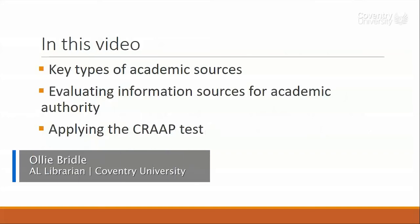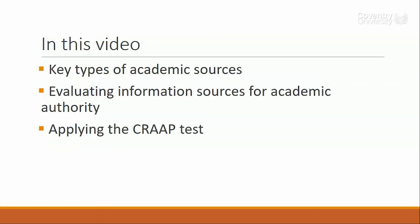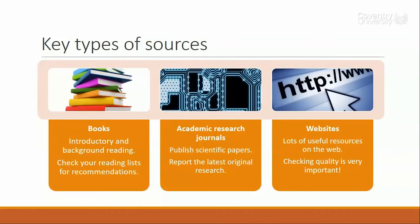In this first video we're going to be looking at key types of academic sources which you'll be using throughout your course, how to evaluate information sources for academic authority, and we'll then look at applying the CRAAP test, which is a tool that you can use to help evaluate particular sources for their information quality.